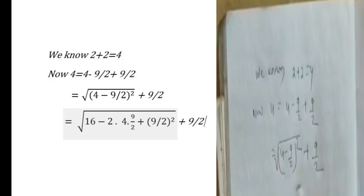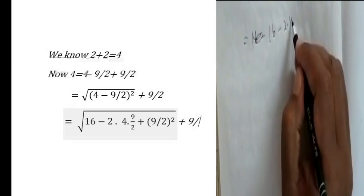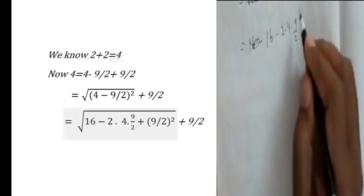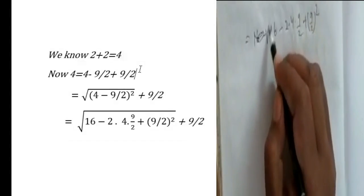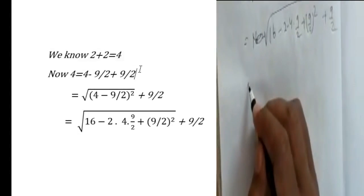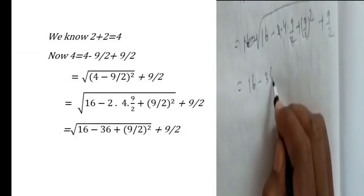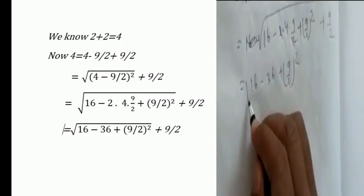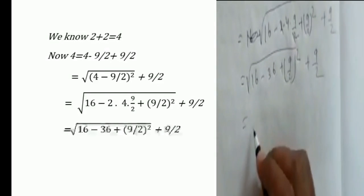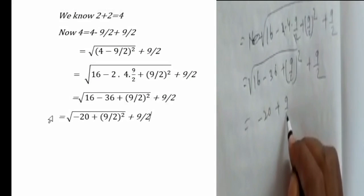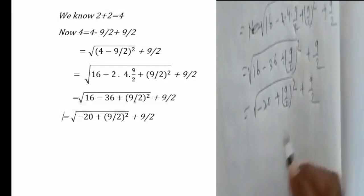1 plus 9 by 2: 16 minus 16 minus 2 into 4 into 9 by 2, plus 9 by 2 whole square root of 1 plus 9 by 2, equal to 16 minus 36 plus 9 by 2 whole square root of 1 plus 9 by 2, root of 1 by 2 whole square root of 1 plus 9 root of 2.